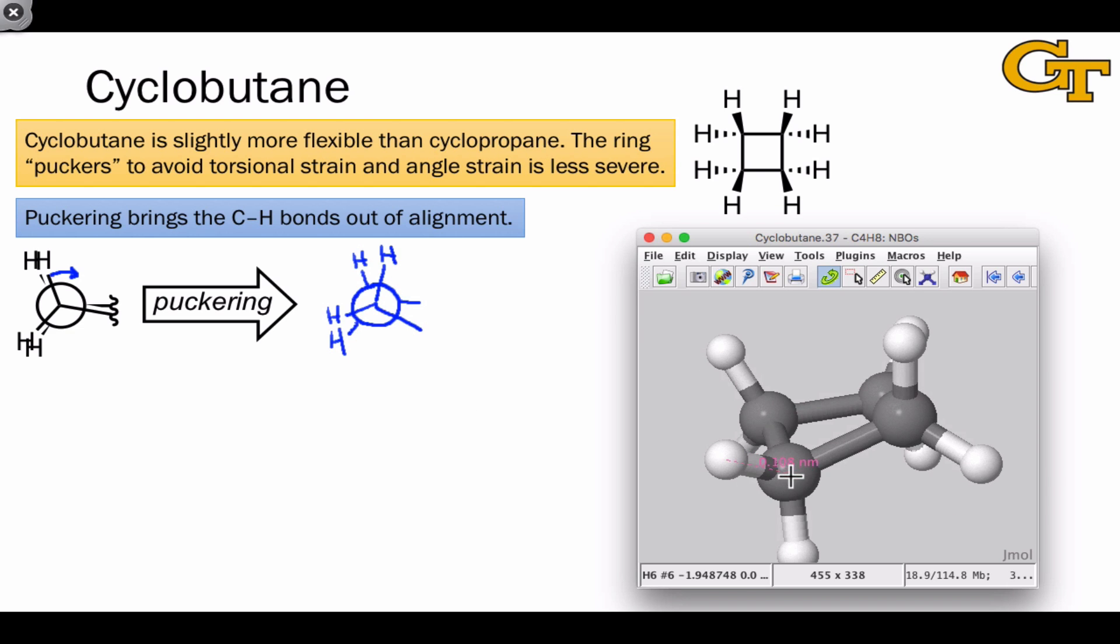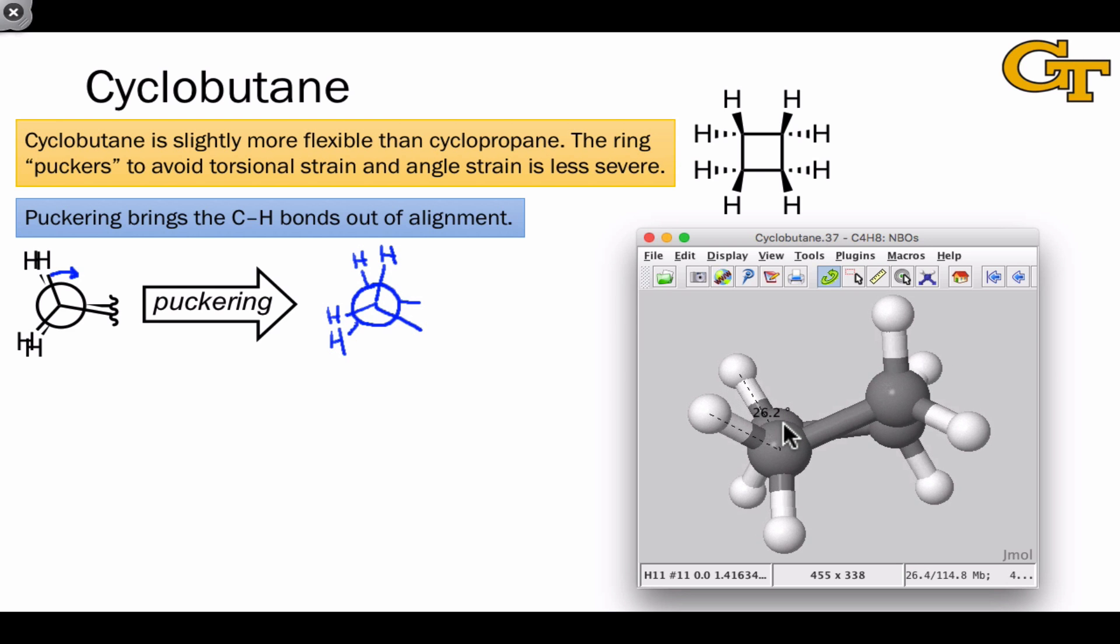We've managed to achieve a dihedral angle that is certainly not zero now that the ring has managed to pucker somewhat. In this particular quantum mechanically optimized structure, this dihedral angle is about 26 degrees. That's still far from the 60-degree ideal, so cyclobutane has a considerable amount of torsional strain left in it. However, it's much better than cyclopropane, where this angle is necessarily zero degrees.